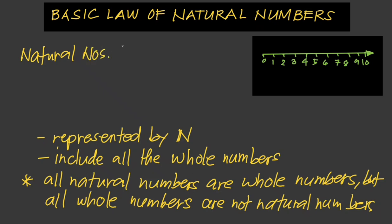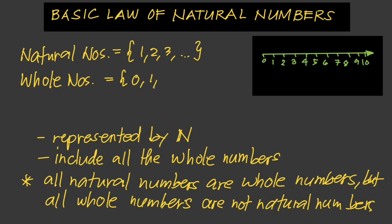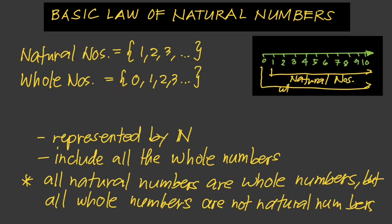Natural numbers form the set {1, 2, 3, ...} to positive infinity. But for whole numbers, the set starts from 0: {0, 1, 2, 3, ...}. On the number line, natural numbers start from 1, while whole numbers start from 0.